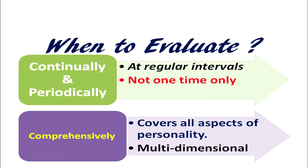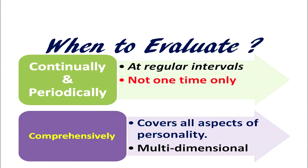When should we evaluate a child's progress? Evaluation should be at continual and periodic intervals — it should be a regular process, not a single short event conducted only one time. Additionally, evaluation should be comprehensive in nature, meaning it should cover all aspects and dimensions of personality. Evaluation should be multidimensional, addressing all dimensions of personality, and that is what makes it comprehensive.